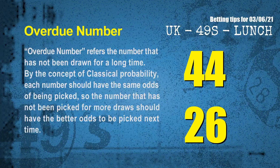The final information for you is overdue numbers. An overdue number refers to a number that has not been drawn for a long time. Also, by the concept of classical probability, each number should have the same odds of being picked, so a number that has not been picked for more draws should have better odds to be picked next time. After counting thousands of results, we find out that the most overdue two numbers are 44 and 26.